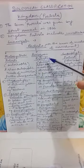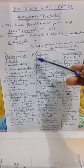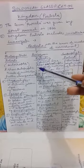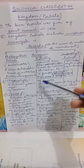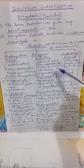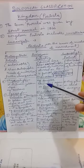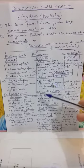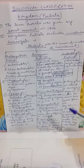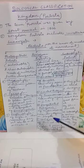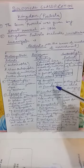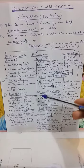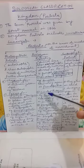The second group is protozoa. Protozoa, as mentioned, are animal-like organisms and that is why they show heterotrophic mode of nutrition. They are divided into four groups on the basis of their locomotory organs. The first is amoeboid protozoans — example amoeba — and the locomotory organ of amoeba is pseudopodia.